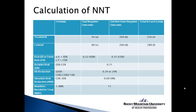Unfortunately, SPSS won't calculate numbers needed to treat — there's no function in SPSS for that. But what SPSS will do is present a standard 2x2 cross-tabulation table, which we will use to make the additional calculations we need. In this table, the rows contain the groups — treatment group in the top row and control group in the bottom row.